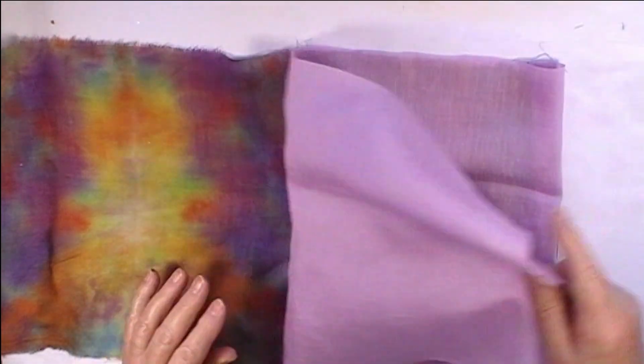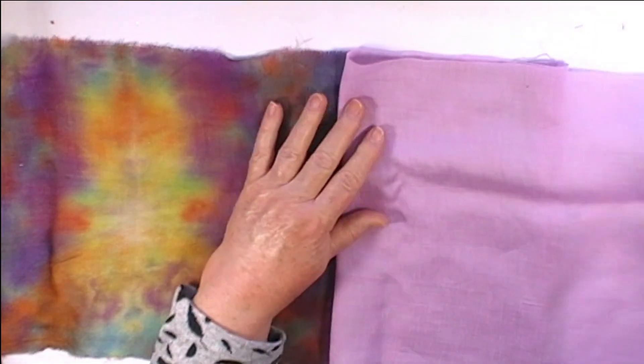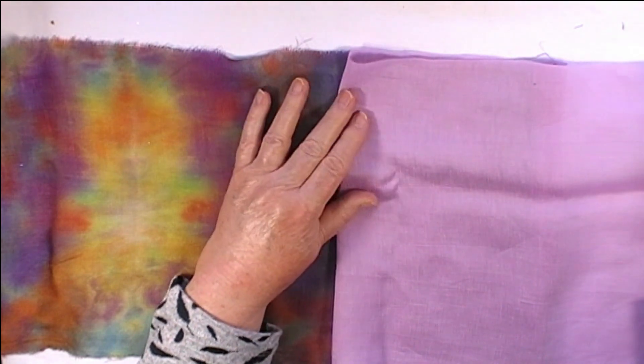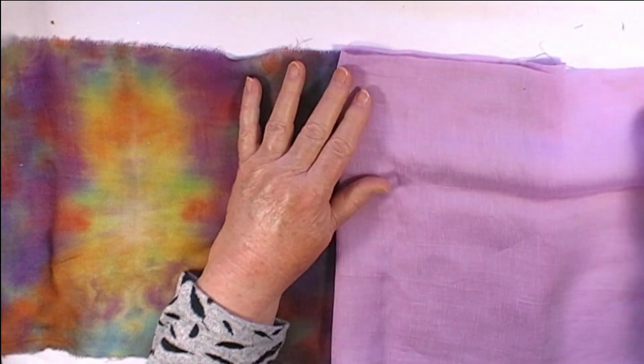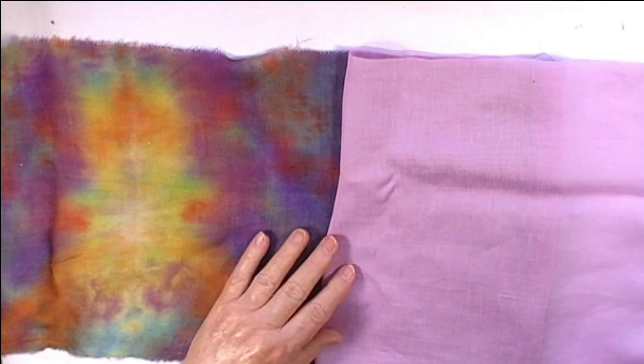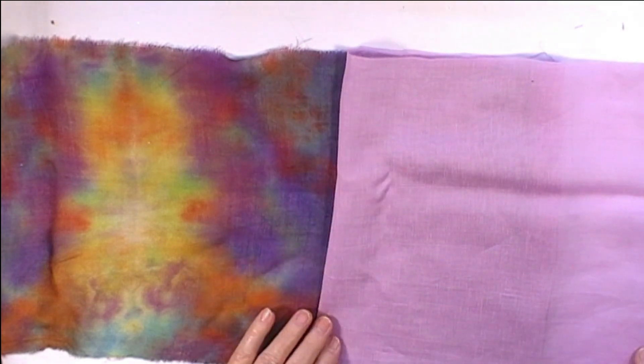Then fold that like that and I take one of the pieces, in this case the lining, and fold it about two thirds of the way up. You'll see it better in a second when I turn it over on the other side.